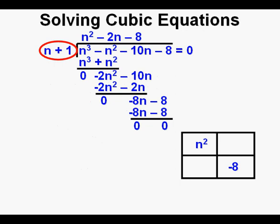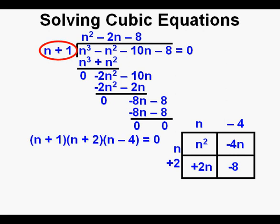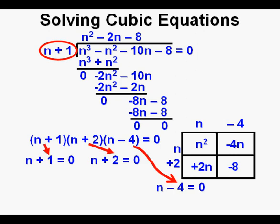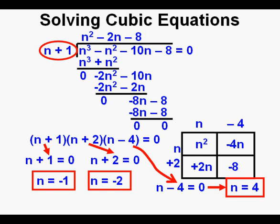Now we need to factor the remaining trinomial n² - 2n - 8. We have put the n² and the -8 terms in the box at the upper left and lower right cells respectively. In order to get the -2n linear term we need 2n - 4 as a factor and n + 2 as a factor. So broken into factors, n³ - 2n - n² - 10n - 8 = 0 is the same as (n + 1)(n + 2)(n - 4) = 0. These three binomials break down to n + 1 = 0, n + 2 = 0, and n - 4 = 0. So the solutions are n = -1, n = -2, and n = 4.